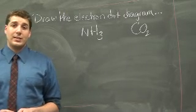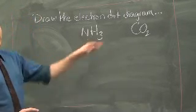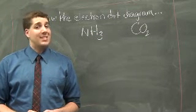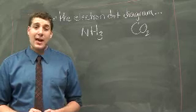This is your review of drawing electron dot diagrams. We're going to start by looking at two molecules. Step one for drawing any electron dot diagram is identifying the number of valence electrons that are present in each of the atoms.